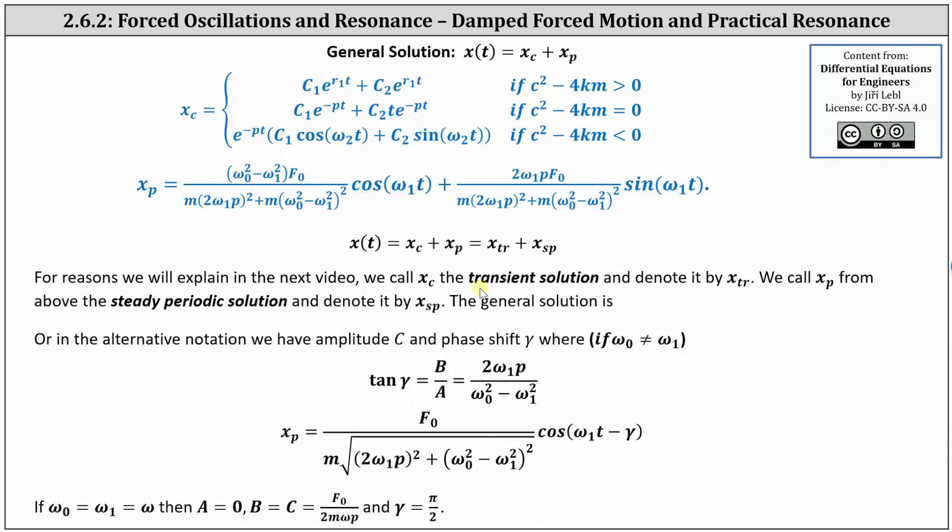But before we go, I do want to mention, for the alternative form of the general solution, where we have the amplitude C and the phase shift gamma, we can express X sub P, the particular solution, in the form shown here below.